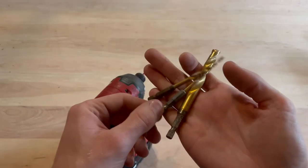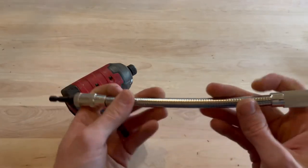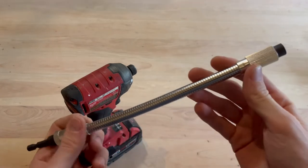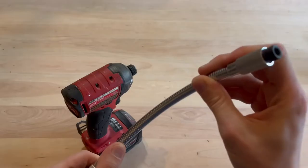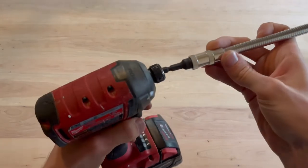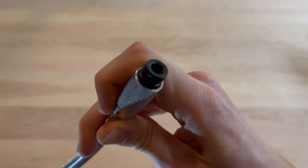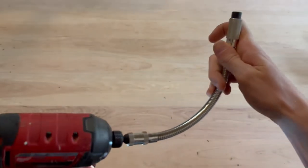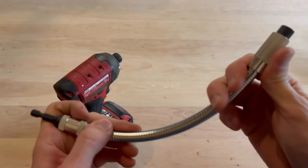Another great impact driver hack is to get one of these, a flexible driver. These come in handy for all sorts of reasons, getting in tight spots around cabinets or appliances, things like that. This just snaps right into the drill, it's got that hex bit, and you can go at pretty much any angle.